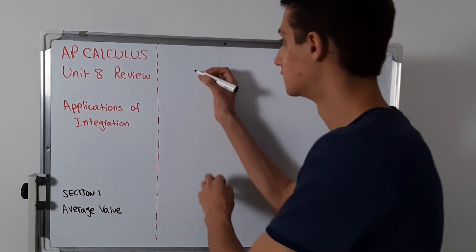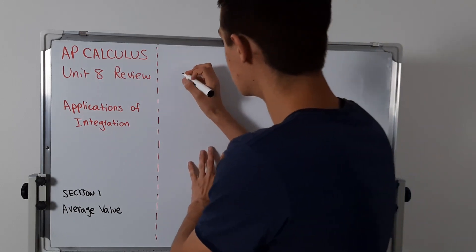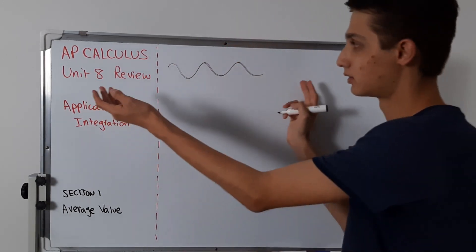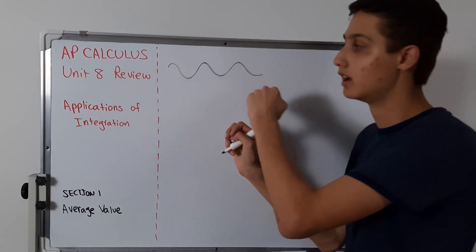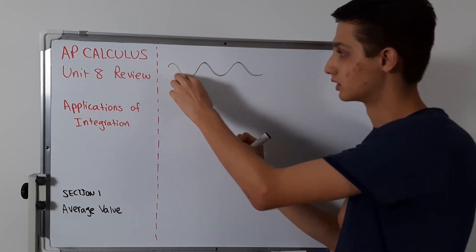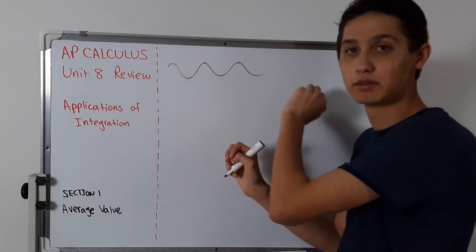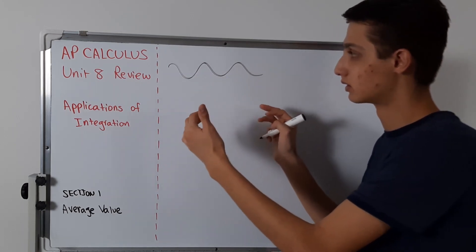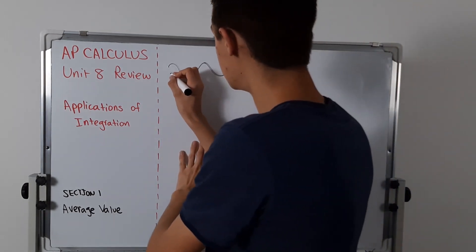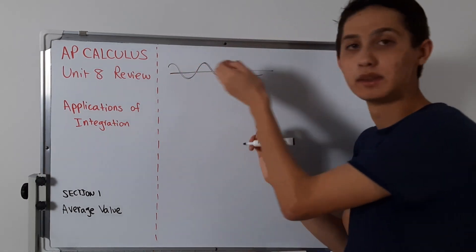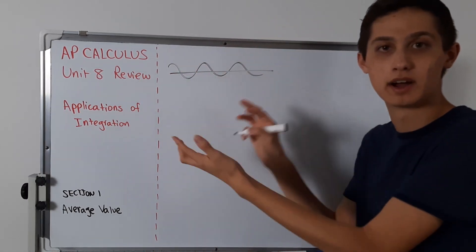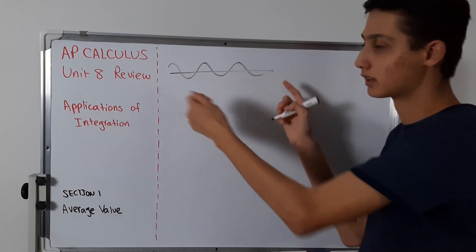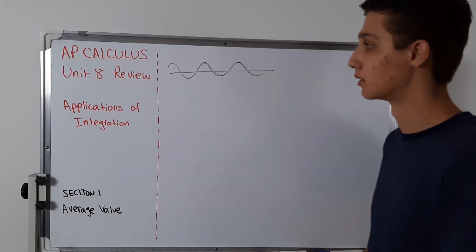Basically, if I have a function that goes kind of like this, if I average all of these values — if I take their heights, their positions — and then put them all on one line, it's going to look something like this, something in the middle, kind of halfway through if we take the average of all of them.